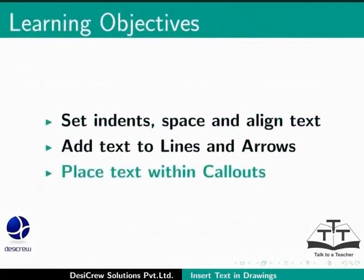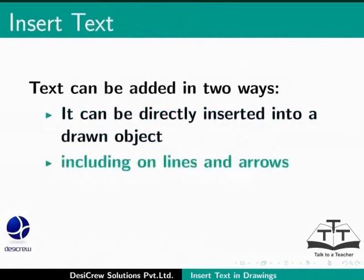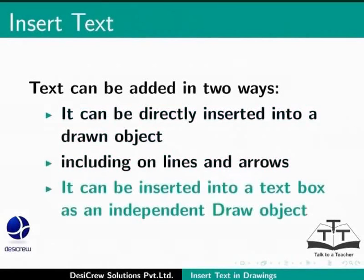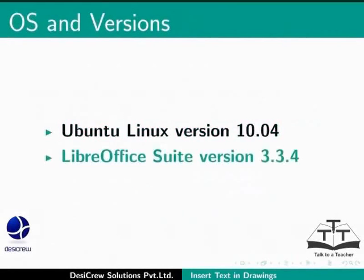Text can be added in two ways: it can be directly inserted into a drawn object, including on lines and arrows, or it can be inserted into a text box as an independent draw object. Here we are using Ubuntu Linux version 10.04 and LibreOffice Suite version 3.3.4.